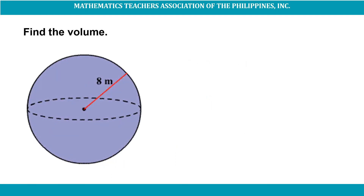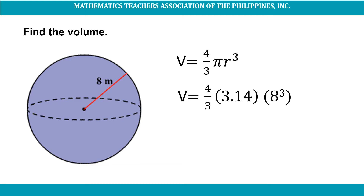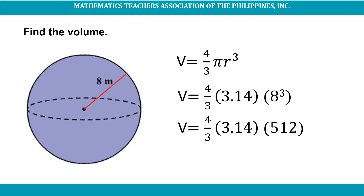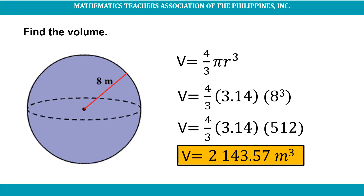Lastly, let's find the volume of a sphere. This sphere has a radius of 8 meters. The formula in finding the volume of a sphere is V = (4/3)πr³. V = (4/3) × 3.14 × 8³ = (4/3) × 3.14 × 512. So the volume of this sphere is 2,143.57 cubic meters.